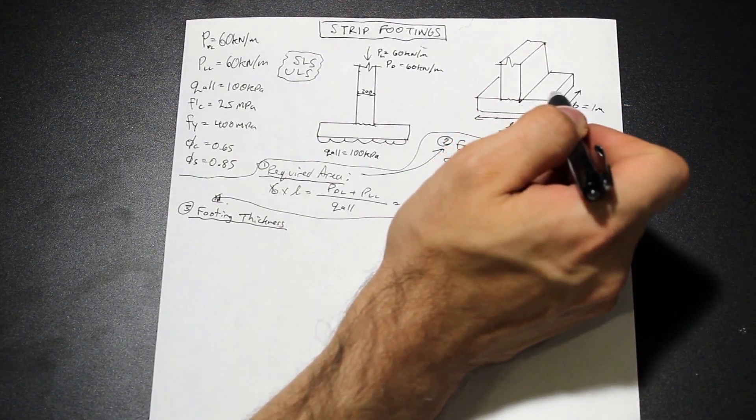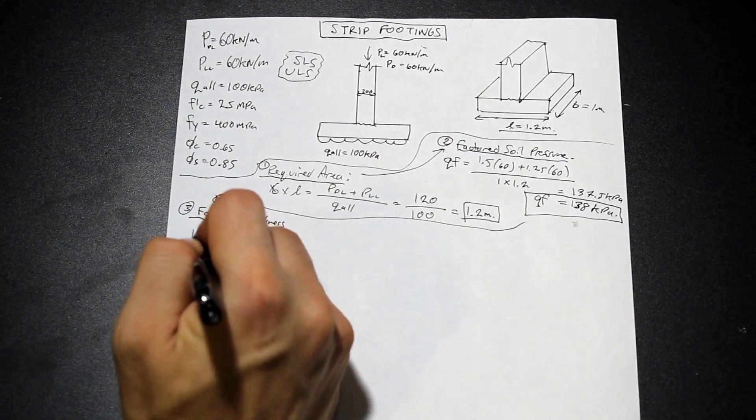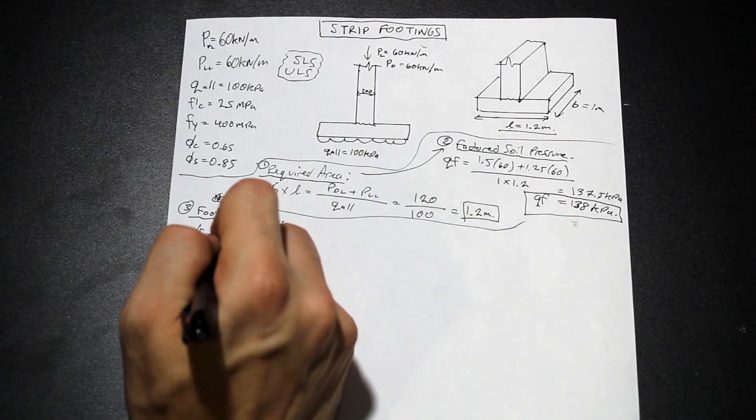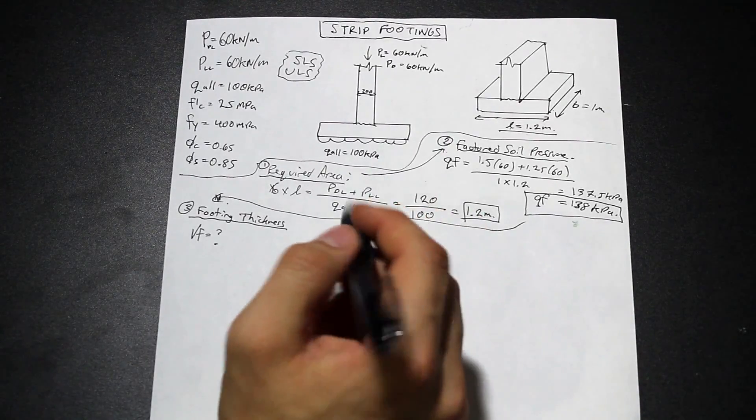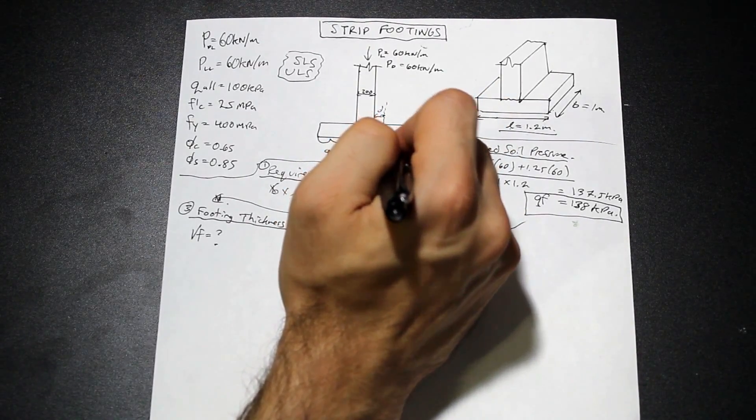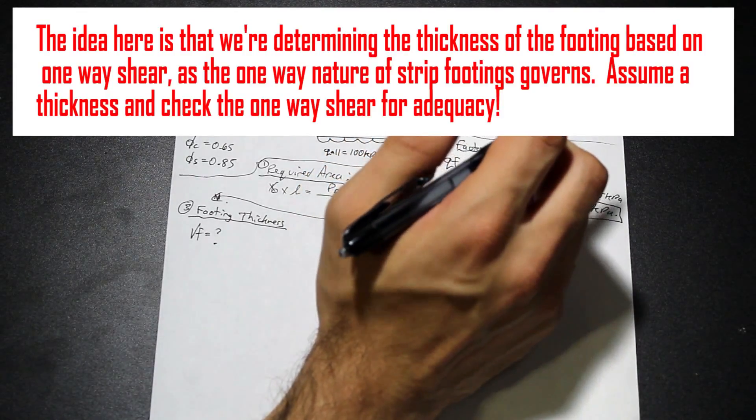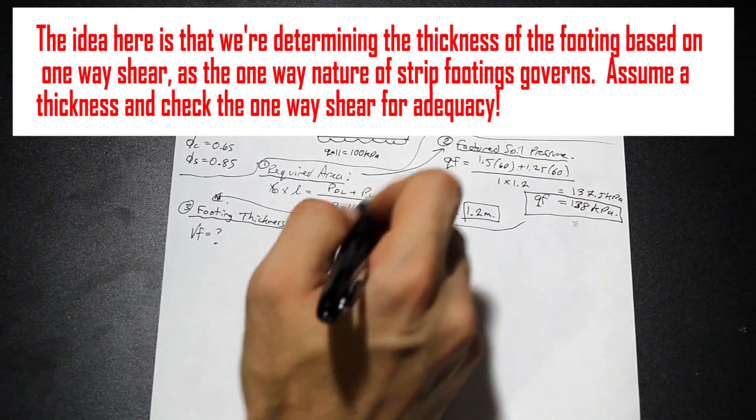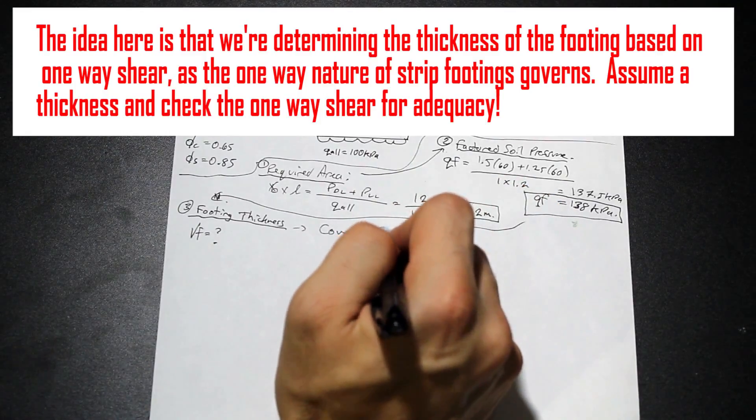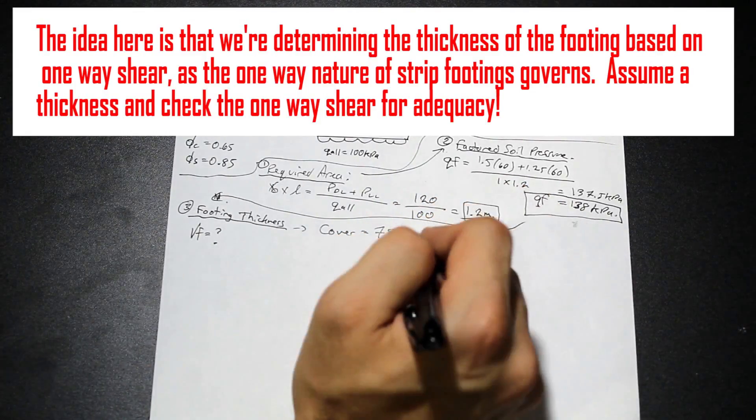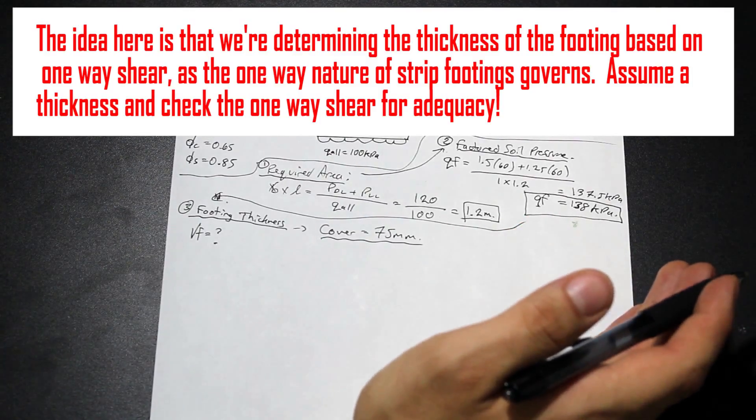First, we need to determine our factored shear force. So we need our VF. What is our VF? Well, we need a few things before we find VF. First of all, we're going to find it at a distance D from the face of the column. That's our critical region where our shear is going to be kind of its worst. First, and now as well, we need the cover. So what's the cover? And usually, I mean, in our country, the cover is 75 millimeters at the base of a footing. That's just a code requirement. And now we need to find the effective footing depth.